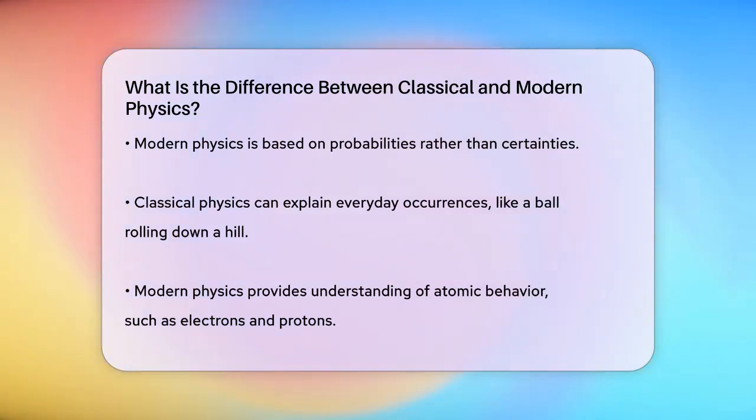For example, classical physics can explain how a ball rolls down a hill, but it can't explain what happens inside an atom. Modern physics, however, can tell us about the behavior of electrons and protons inside an atom, even though we can't see them.